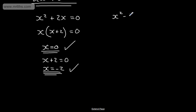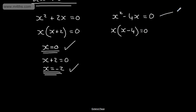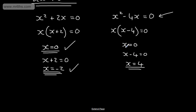So if we had x squared minus 4x is equal to 0, we can factor this. We write it as x times x minus 4 is equal to 0. We always want the right-hand side to be equal to 0. That tells us either x is equal to 0, or x minus 4 is equal to 0, which gives x is equal to 4. If you have a minus inside the bracket, your answer is positive; if you have a positive, your answer is negative.